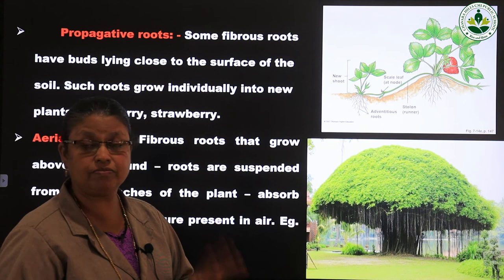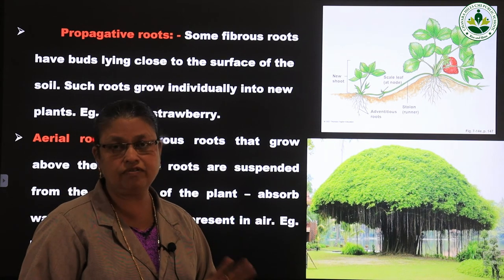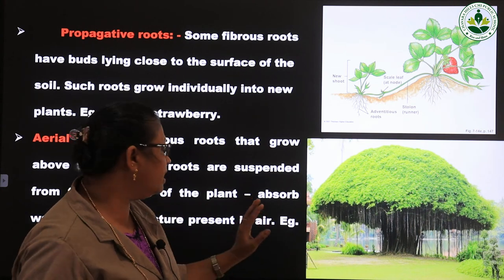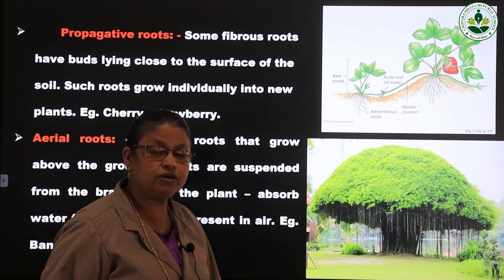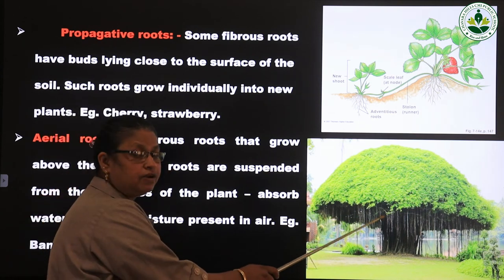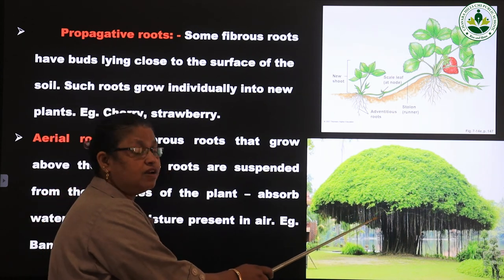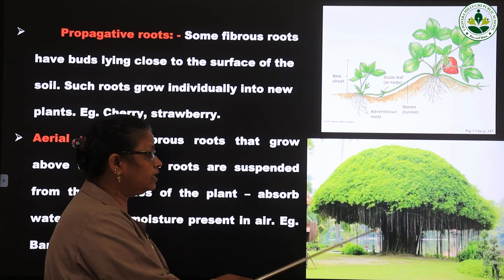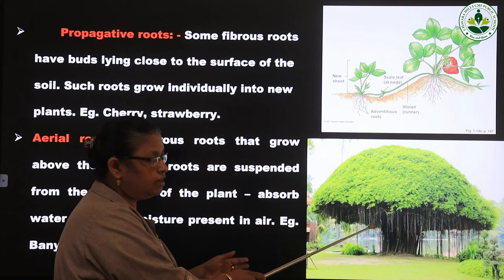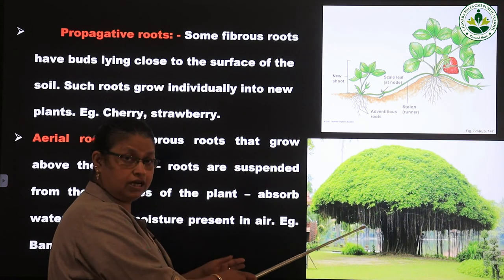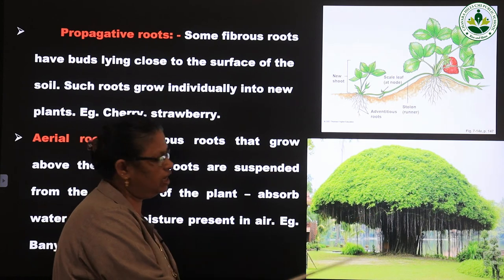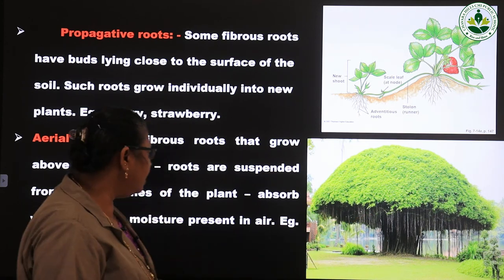Our atmosphere contains water vapor. That water vapor is absorbed by the roots suspended from the branches of the tree. These roots absorb water from the atmosphere where water vapor is present. These roots are hanging from the branches of the trees. For example, the banyan tree.